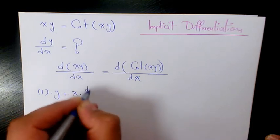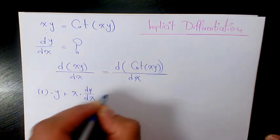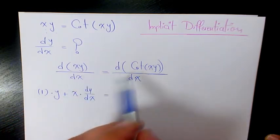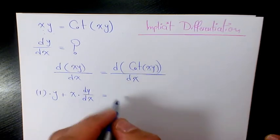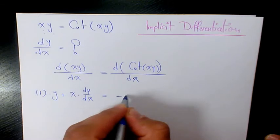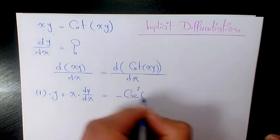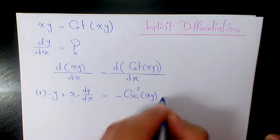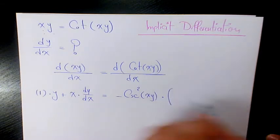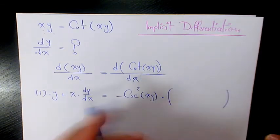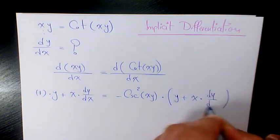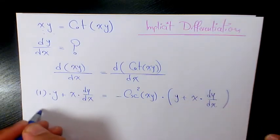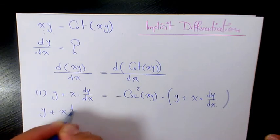And equals the derivative of cotangent xy, which will be negative cosecant squared xy times the derivative of x times y, which again we need to use product rule. It's going to be y plus x times dy over dx. So it's going to be y plus x dy over dx equals negative y cosecant squared xy.